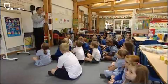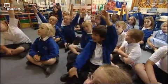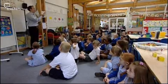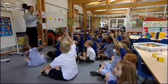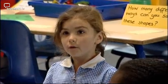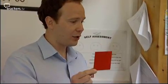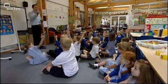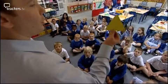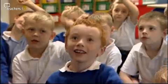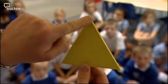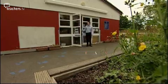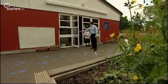Who can tell me what kind of shape this is? A shape hunt is where we give the children the opportunity to look for shapes in the natural environment. It's a square. How many sides does a square have? Four. Good girl. Can you tell me, is a square a 2D shape or a 3D shape? 2D. Good. A good way to start the lesson is to just recap 2D and 3D shapes, looking at the properties — how many sides, how many corners those shapes have.